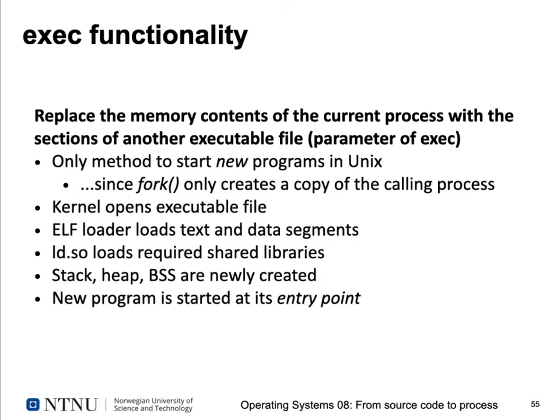When exec is called in the child process, the memory contents of the current process are replaced by the sections of another executable ELF file passed to exec as a parameter. This is the only method to start a new program in Unix, since fork only creates identical copies. When exec is called, the kernel opens the executable file, the ELF loader loads the text and data segments, and ldso is mapped into the address space. ldso checks for required shared libraries — similar to what the ldd tool shows — finds them on disk, and loads them into the shared library address space.